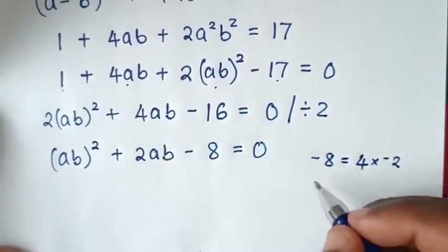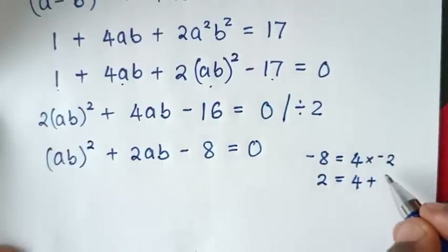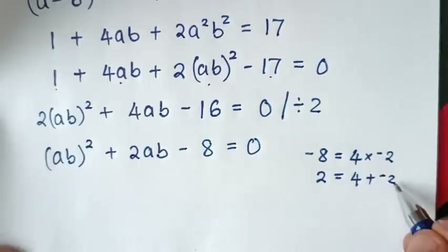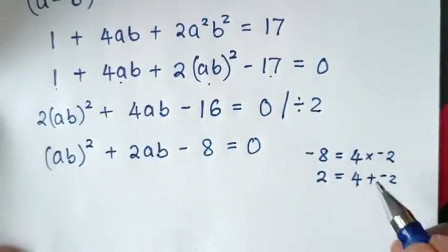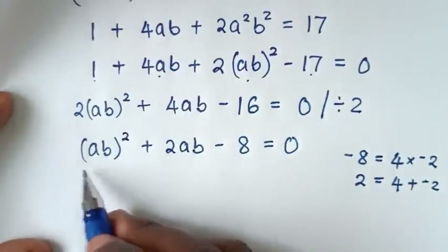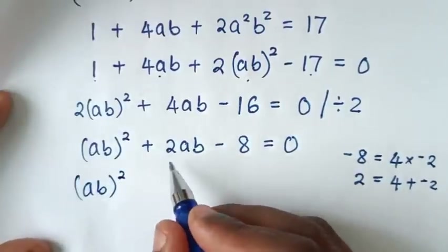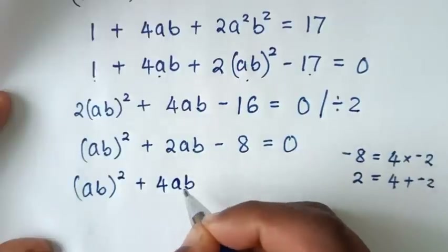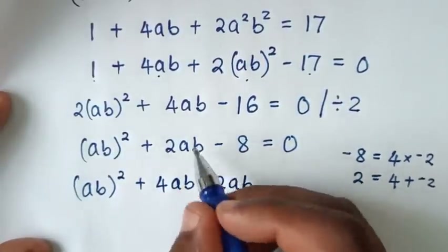The coefficient of ab is 2, and 2 equals 4 + (-2), since 4 + (-2) = 2. So we use these factors. By grouping and factorization: (ab)² + 4ab - 2ab, which splits the 2ab term.